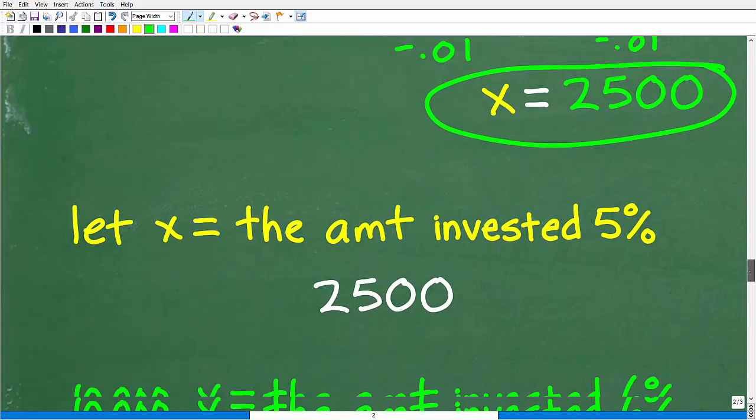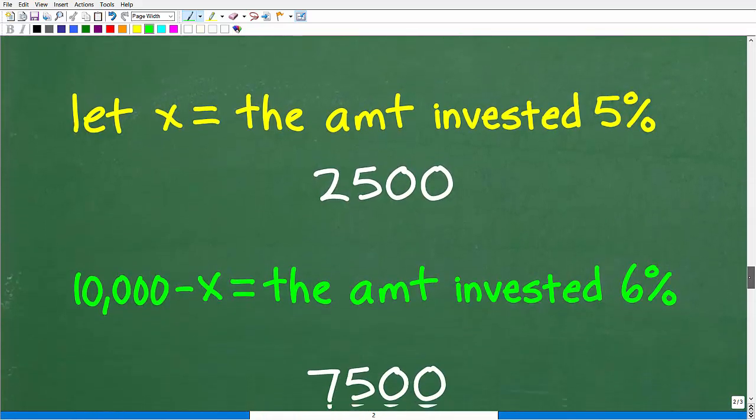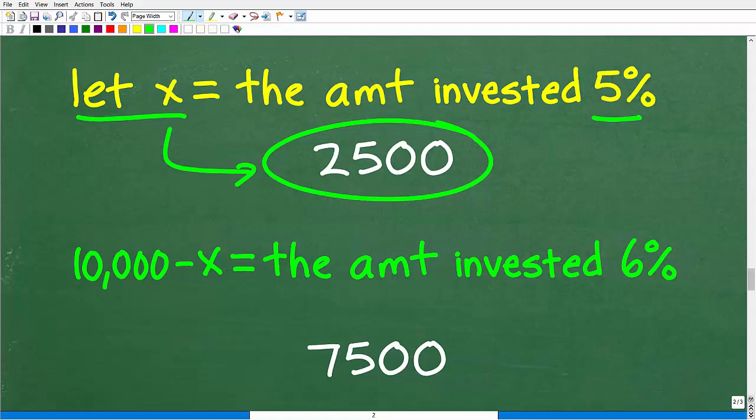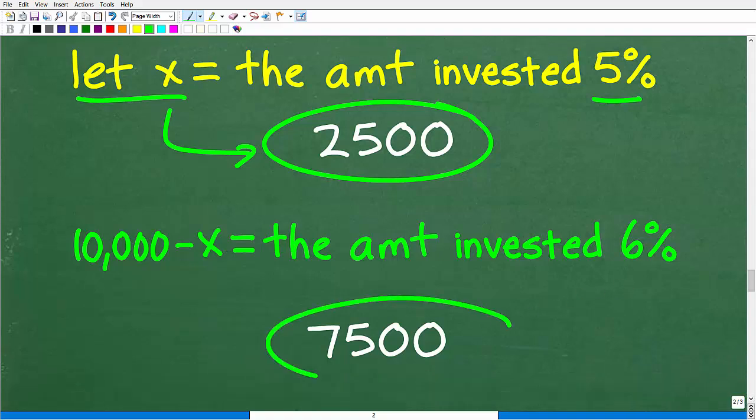So what was x? Well, we have to go back to the beginning of the problem. Remember, x, we said we're going to let x equal the amount Lou invested at 5%. Okay, so Lou invested $2,500, or the value of x, or what x was equal to, at 5%. And if he had $10,000, right, and he invested $2,500 at 5%, well, it's $10,000 minus $2,500, which is x, is how much he invested at 6%, which, of course, again, is $7,500.